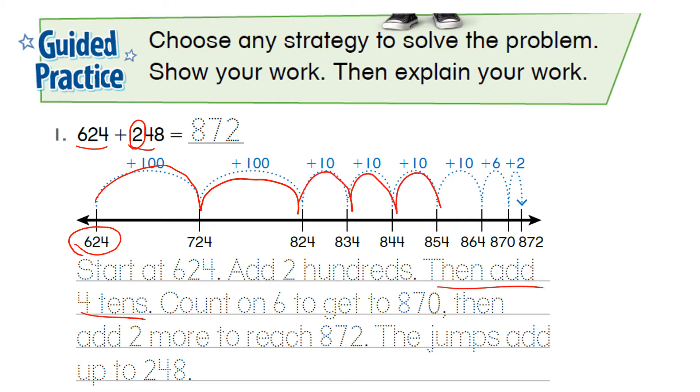Then add 4 tens: 1, 2, 3, 4. And that gets us to 864. We added 4 tens because there was a 4 in the tens place.